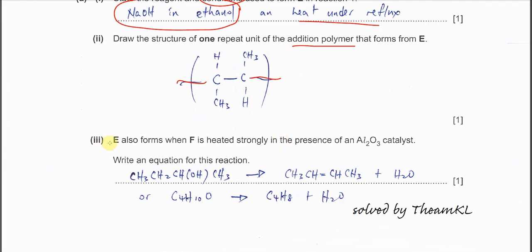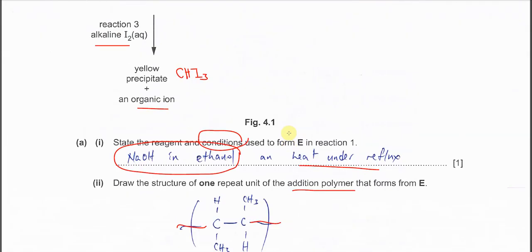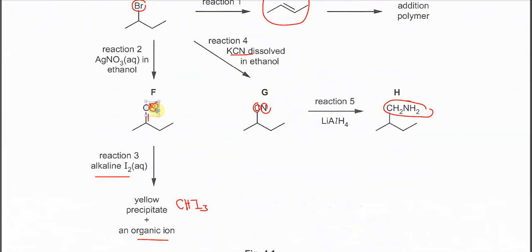Part 3. E also forms when F is heated strongly with the presence of aluminum oxide. This one is quite obvious, it's the dehydration. F is this, the alcohol, secondary alcohol.